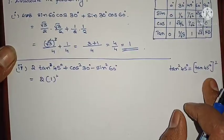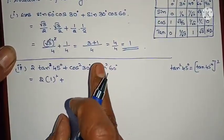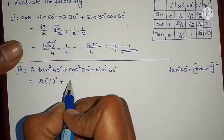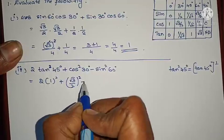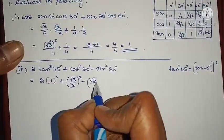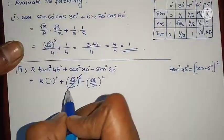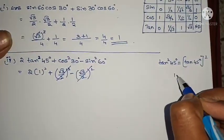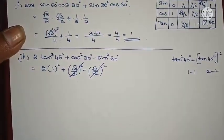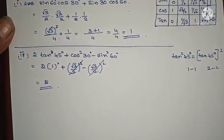Here also the same way: cos 30 whole square. Cos 30 value is √3/2, so (√3/2)². Minus sin 60, which is again √3/2, whole square. See here: plus (√3/2)² minus (√3/2)² — these cancel each other. So 1 square is 1, and 2 into 1 = 2. Your problem is over.